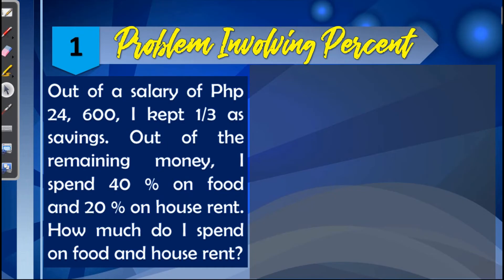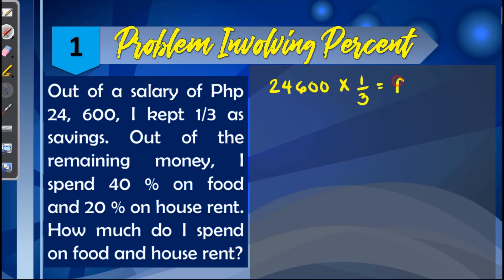Last, we have real life problems involving percent. Problem number one: Out of a salary of 24,600 pesos, I kept one-third as savings. Out of the remaining money, I spent 40 percent on food and 20 percent on house rent. How much do I spend on food and house rent? First, we get one-third of 24,600: 24,600 × one-third = 8,200 pesos, which goes to savings.